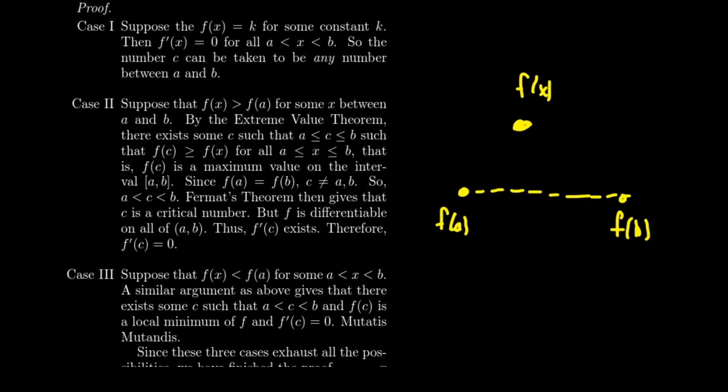The extreme value theorem says if you have a continuous function on a closed interval, at some point on the interval a to b, you will obtain an absolute maximum value. So the extreme value theorem guarantees there exists some c, which obtains the absolute maximum of that interval. So f(c) is greater than or equal to all of the f(x)'s in this situation. Well, since there's some f(x) that's larger than f(a), then it turns out that f(a) cannot be the absolute maximum because there's something bigger than it. And since f(b) is equal to f(a), then f(b) cannot be the maximum.